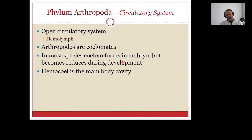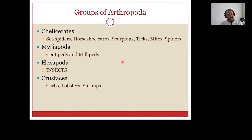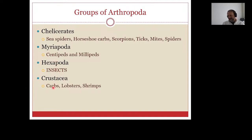There are different groups of Arthropoda: Chelicerata — sea spiders, horseshoe crabs, scorpions, ticks, mites, and spiders; Myriapoda — centipedes and millipedes; Hexapoda — the most important group of which are insects; and Crustacea — crabs, lobsters, and shrimps. These are all animals you know from your environment.